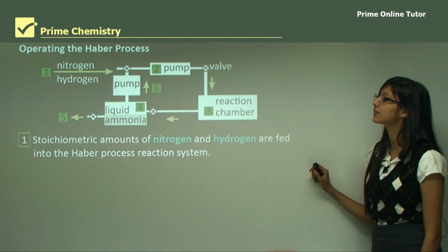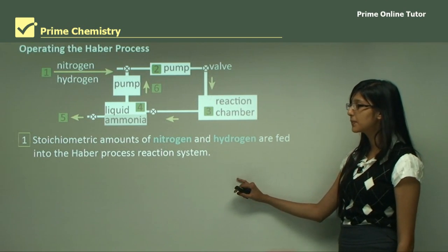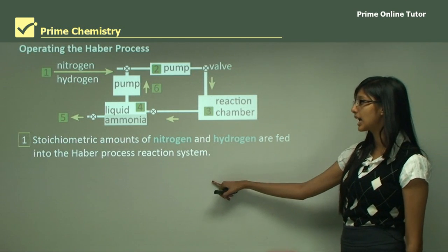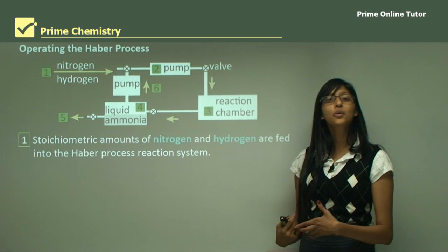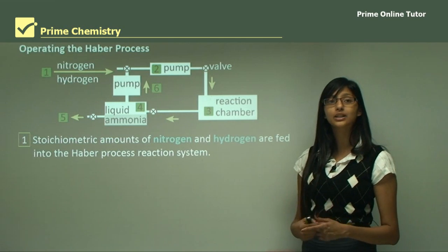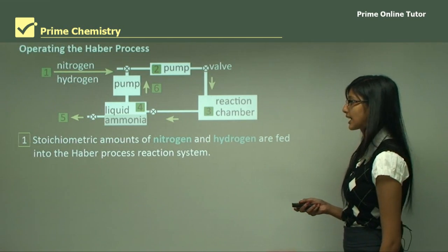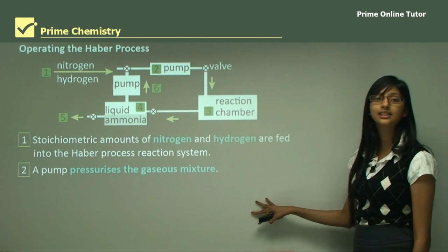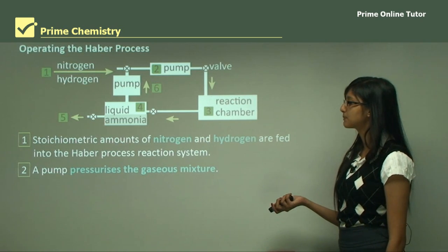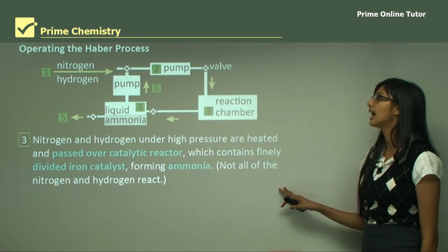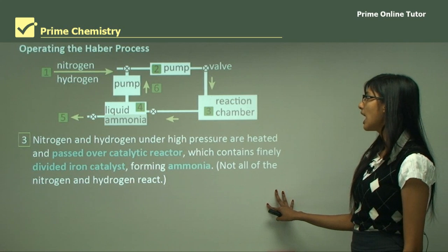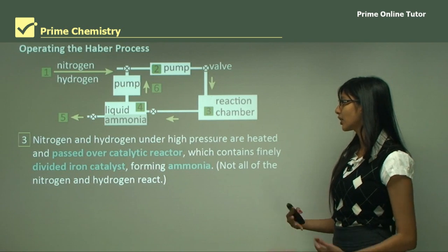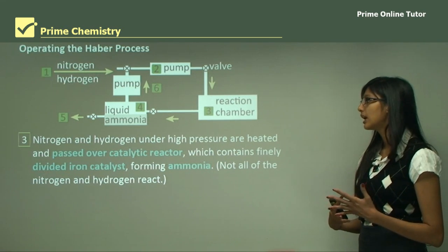In the Haber process, step one involves stoichiometric amounts of nitrogen and hydrogen being fed into the reaction system. In step two, a pump pressurizes the gaseous mixture. In step three, the nitrogen and hydrogen under high pressure are heated and passed over the catalytic reactor, which contains finely divided iron catalyst, forming ammonia.